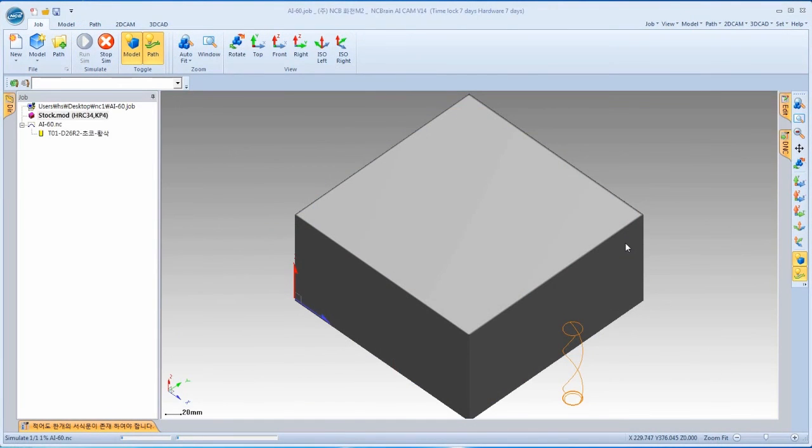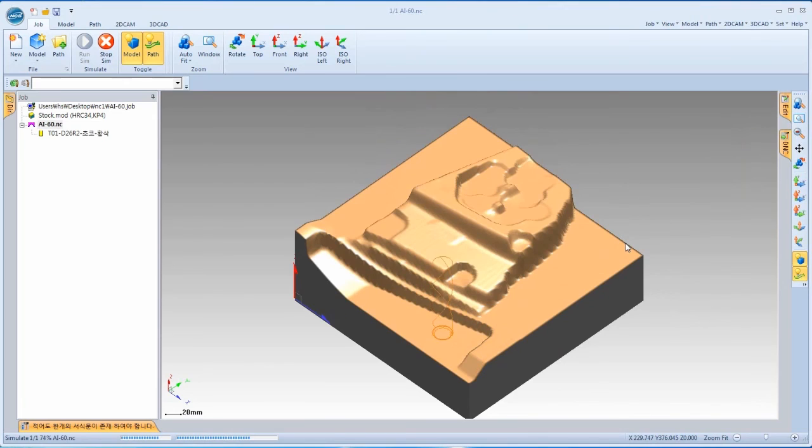As toolpath calculation is done, optimize simulation starts immediately. You can start roughing right away because the toolpath process will be done in order.